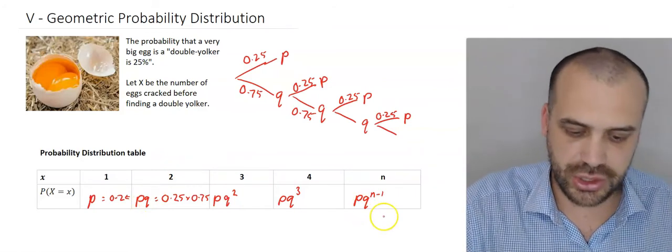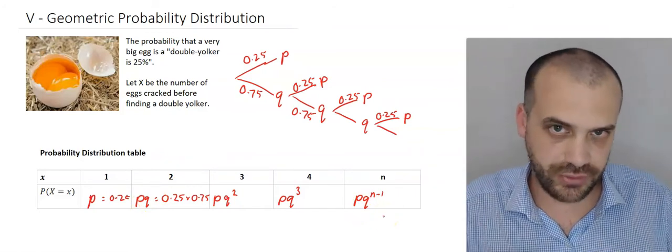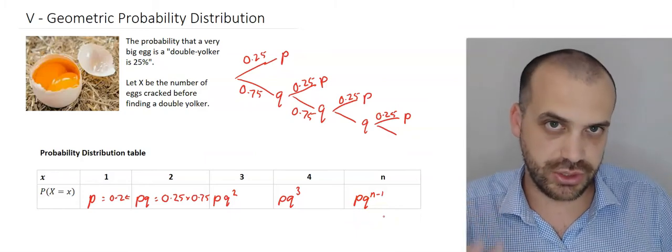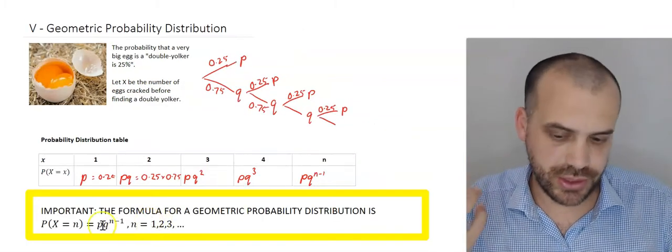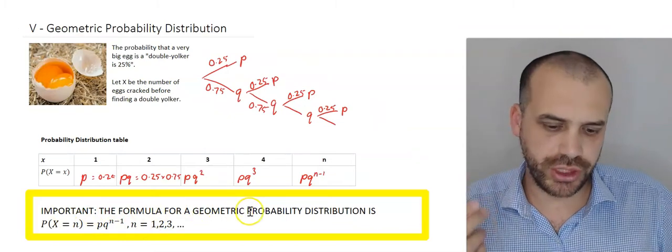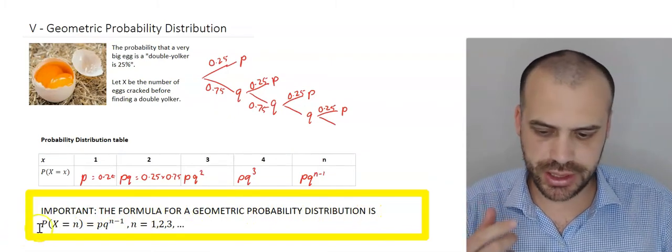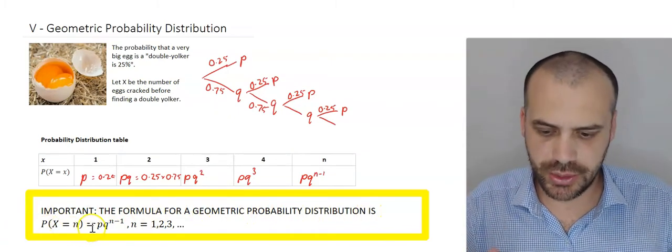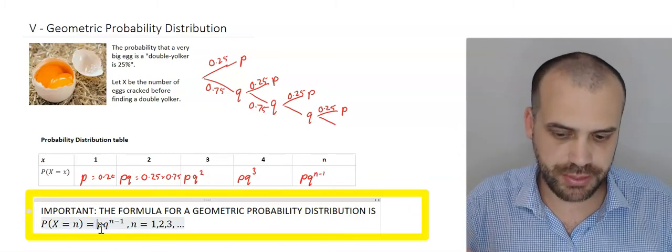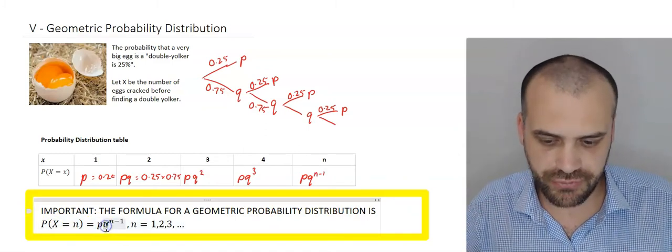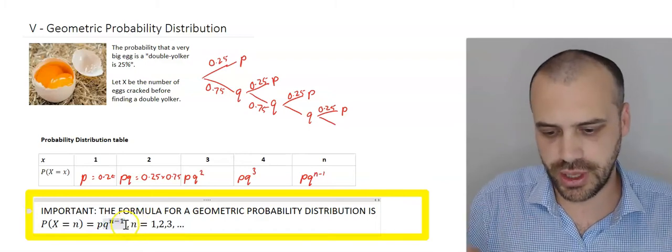And that is a super fantastic formula for this geometric probability distribution. This is the big takeaway from this question. The formula for a geometric probability distribution is P(X equals N) equals probability of success P times probability of failure Q to the power of N minus 1.